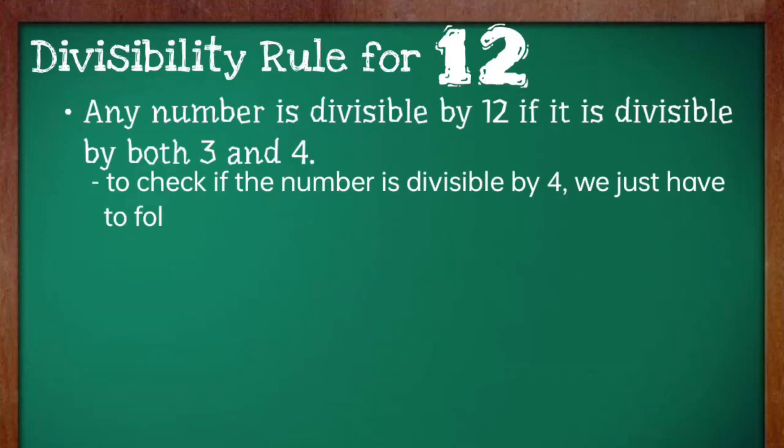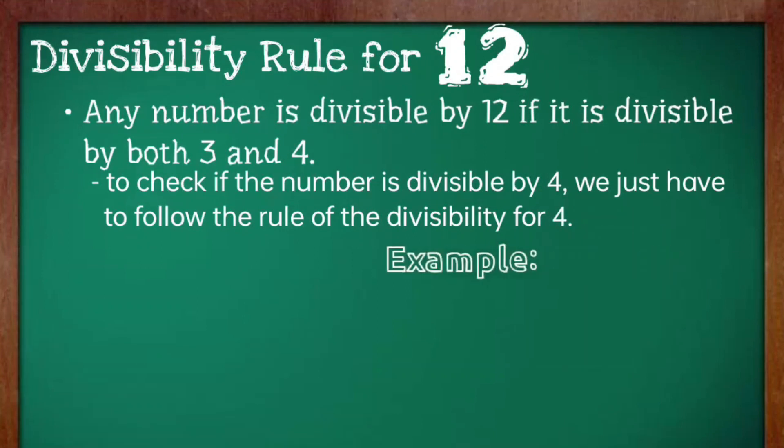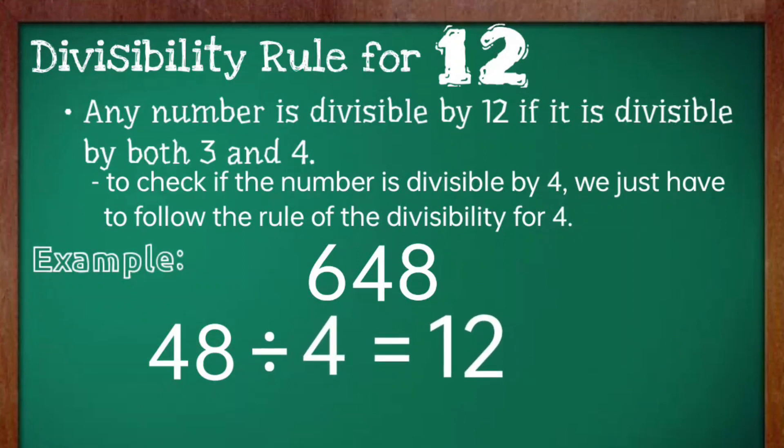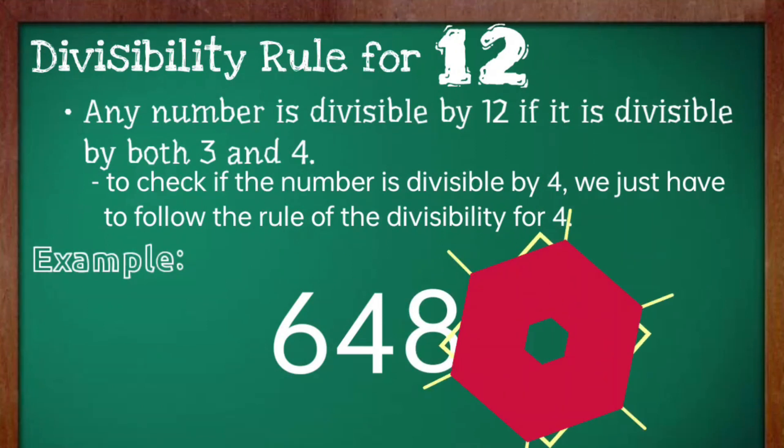To check if the number is divisible by 4, we just have to follow the rule of divisibility for 4. For example, the number 648 is divisible by 4 since the last two digits are divisible by 4. 48 divided by 4 is equal to 12. Hence, the number 648 is divisible by 12.